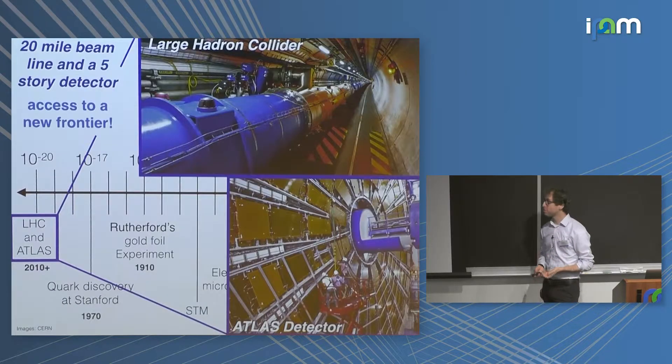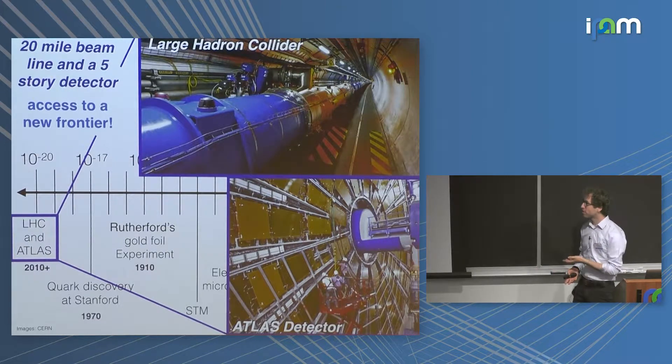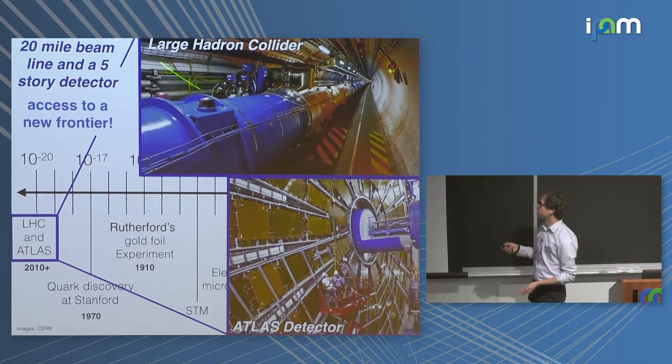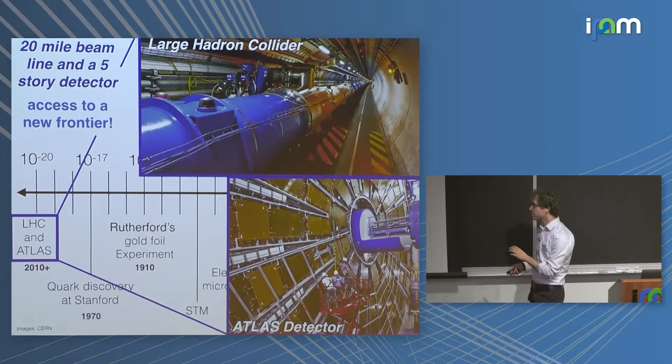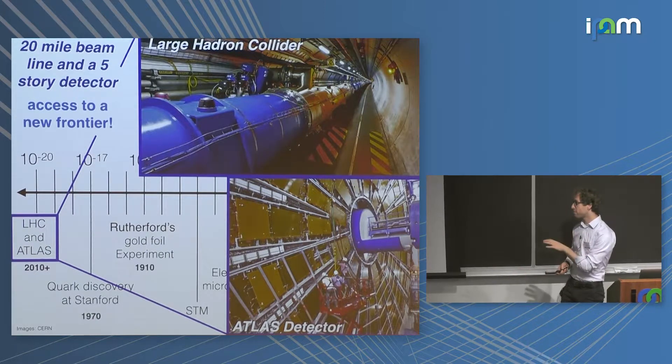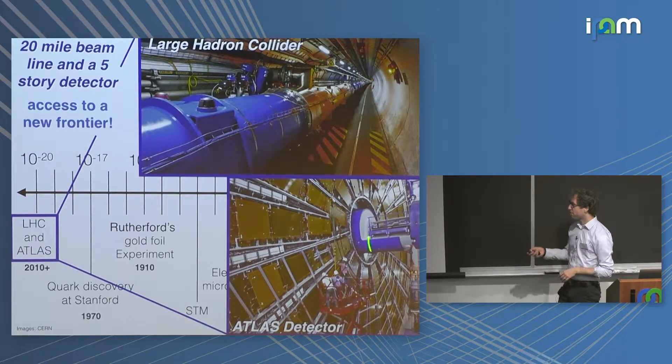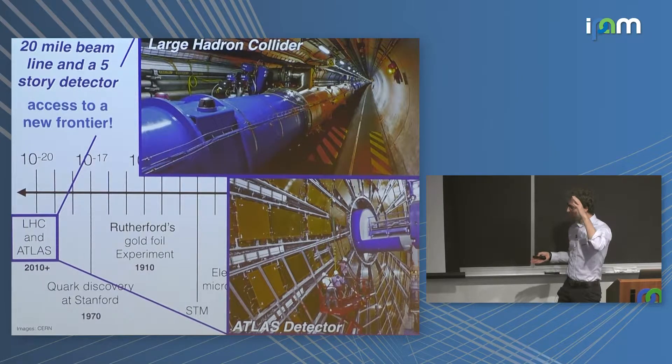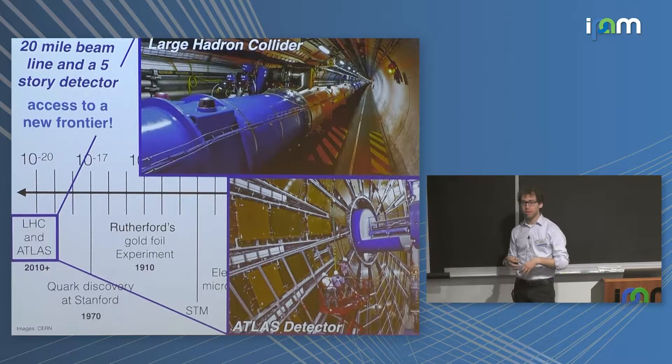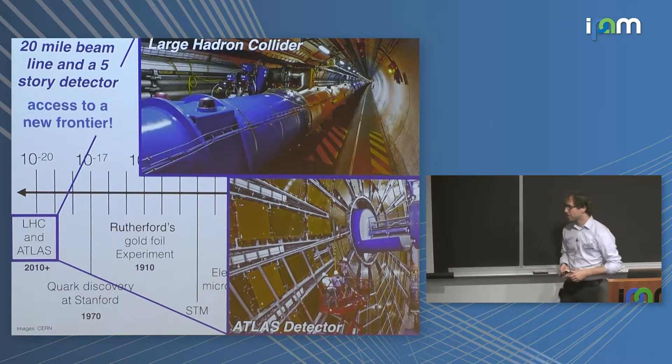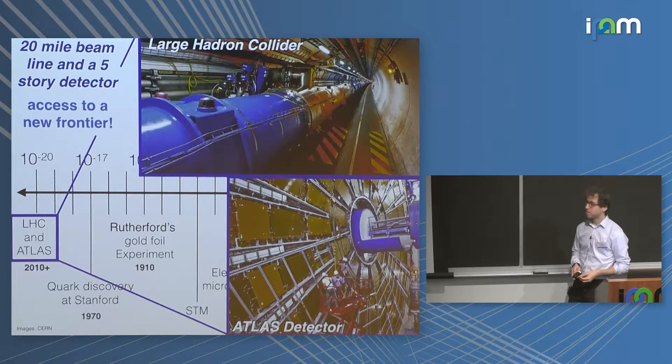And in the present day, the most powerful terrestrial microscope is the Large Hadron Collider, which is a 20-mile circular beam in Geneva, Switzerland. Here's a small segment of the collider itself, and here's a small piece of the five-story Atlas Detector, the one I work on. It's 100 meters below ground and has the precision to measure trajectories of particles within microns.